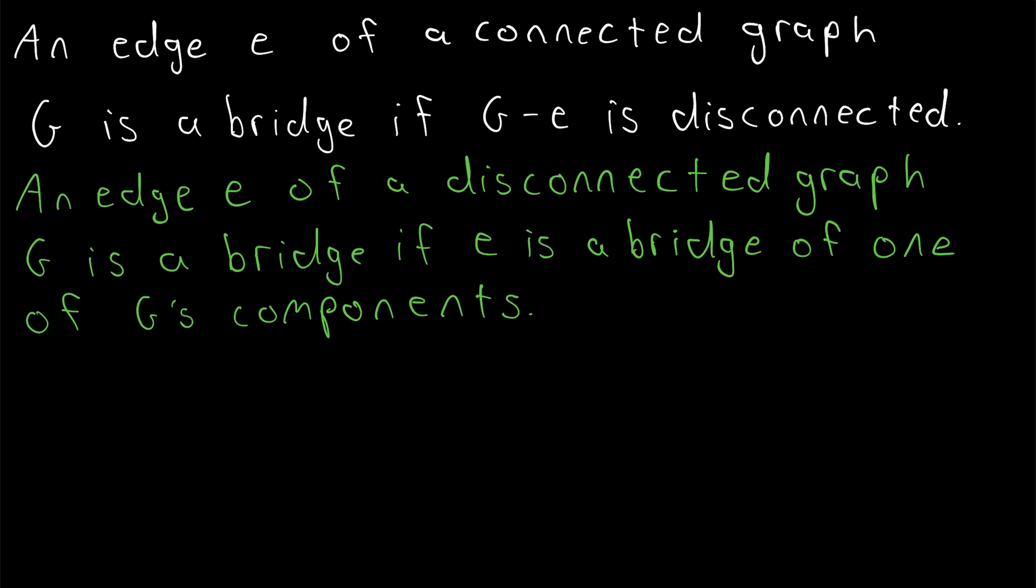So we can say that an edge of a graph is a bridge if deleting it disconnects any of the graph's components. Here's another simple way to think about bridges. Suppose that G is a graph—connected, disconnected, doesn't matter—just an arbitrary graph, and let's say that E is one of the edges of G. So E is an element of the edge set of G.